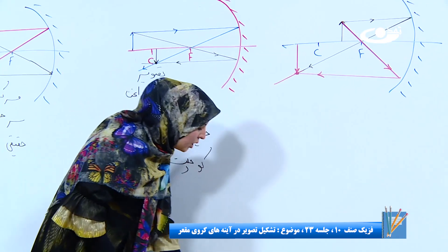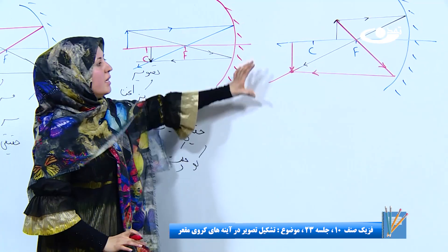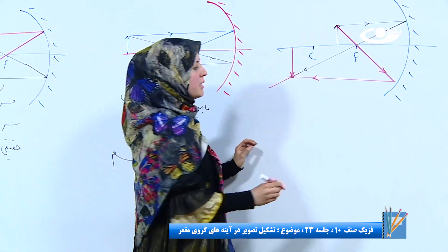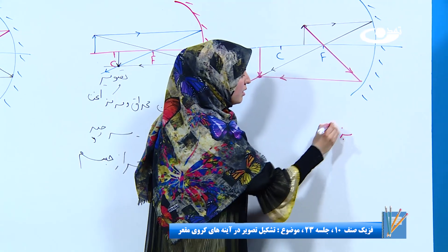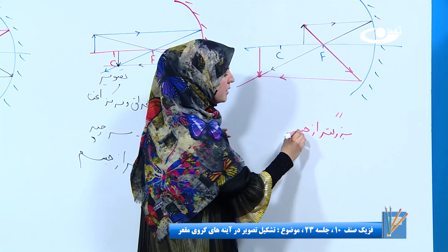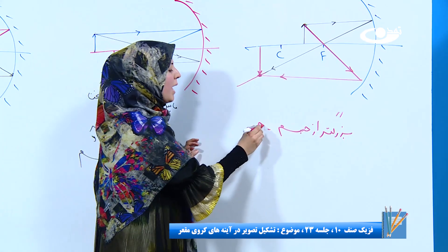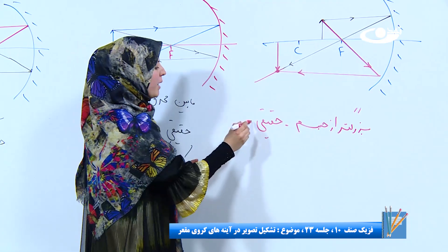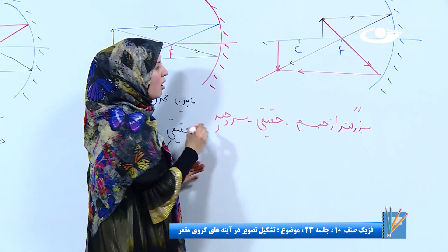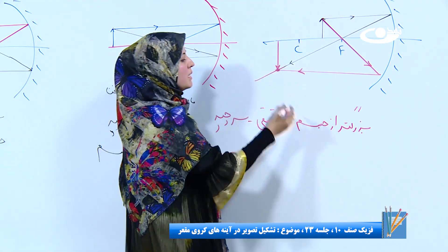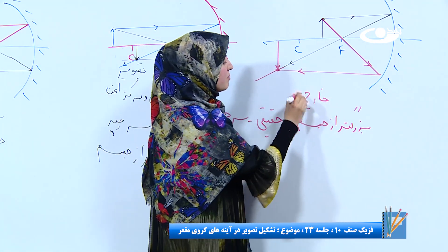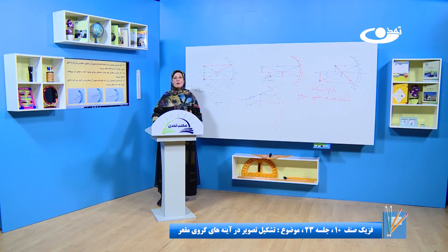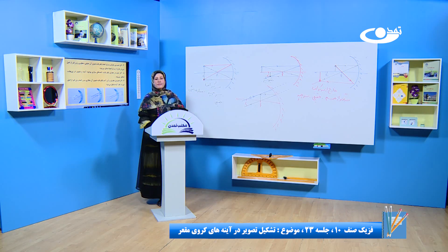ببینیم تصویر برخلاف موردهای گذشته بزرگتر از جسم شده. بزرگتر از جسم. حقیقی یا مجازی؟ حقیقی، چون پشروی آینه هست. سرراسته هست یا سرچپه؟ سرچپه. در کجا تشکیل شده؟ در خارج از مرکز انهنا. تا جلسه بعدی شما را به خدای بزرگ می‌سپارم، خوده‌ها فتا تان.